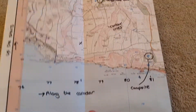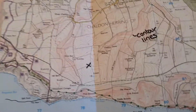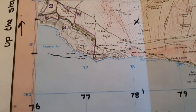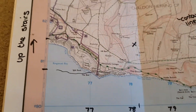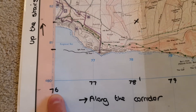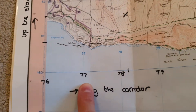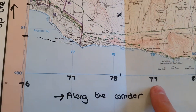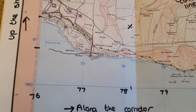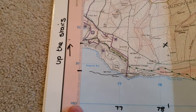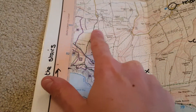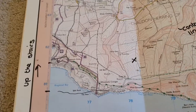So to start off with let's find a part of the map. This map has lines on it called grid lines. You've got line 76, 77, 78, 79, and 80 — these are the names of the vertical lines. Then up the side you've got 80, 81, 82, 83 — and these are the names of the horizontal lines.